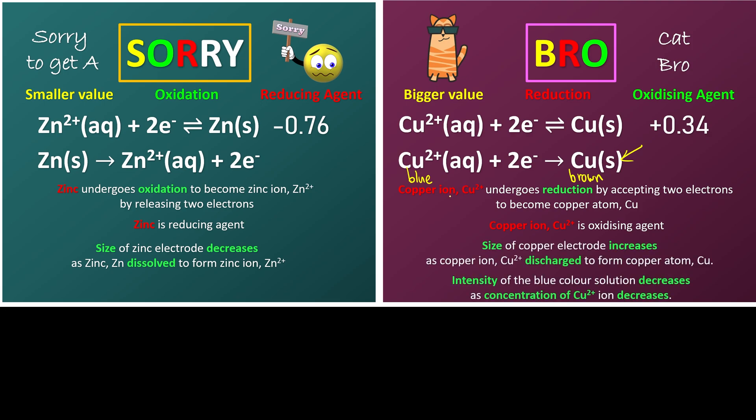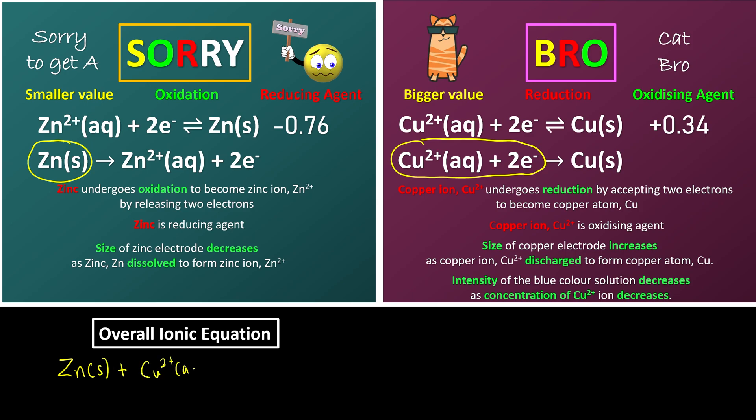And most of the times we need to write down the overall ionic equations. It's going to be very easy since we did do the reverse. Whatever on the left, we'll write down together on the left. So we're going to write now as zinc solid plus copper 2+ aqueous plus two electrons.